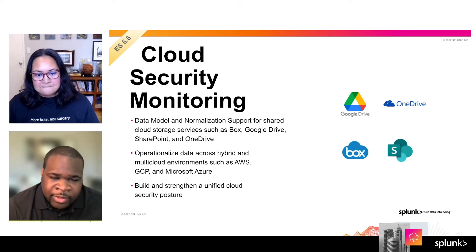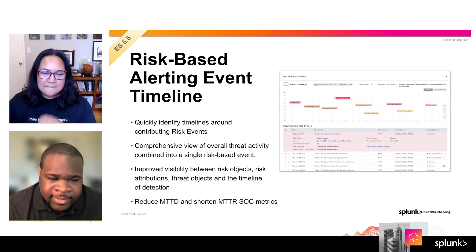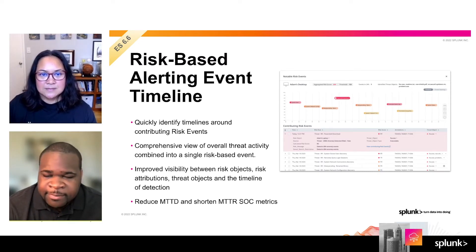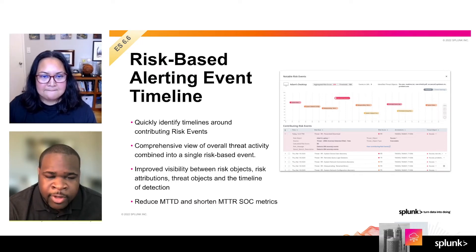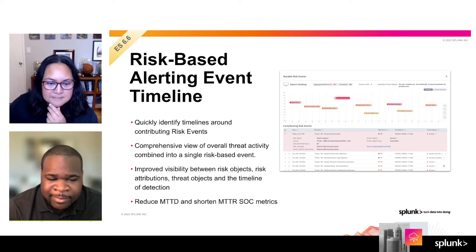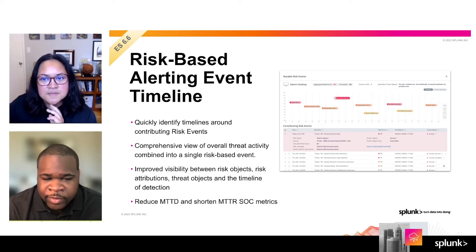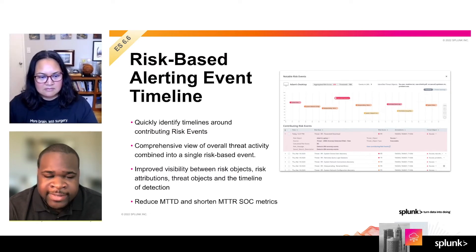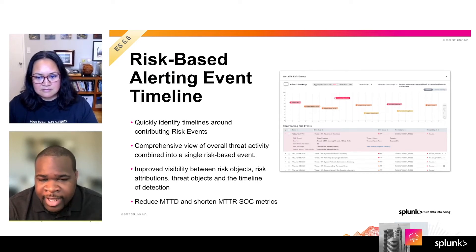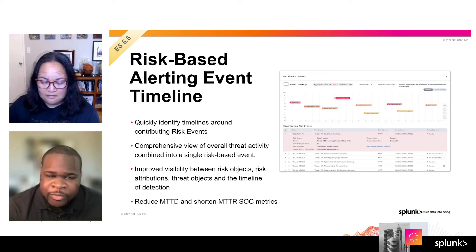Another capability we've added to Enterprise Security in the 6.6 release is the risk-based alerting event timeline. The risk-based alerting event timeline allows you with one click to instantly see all of the risk events that contributed to a risk notable. With one click, you're able to see all the immediate context about what caused a risk object's risk score to exceed the threshold. We think this is going to allow analysts to really accelerate how much information they're able to process and make a decision about whether or not this notable event needs further investigation. Patrice, do you have any other information you want to share about risk-based alerting?